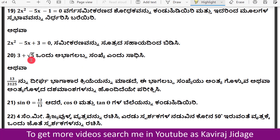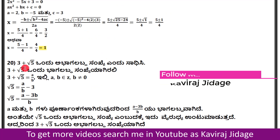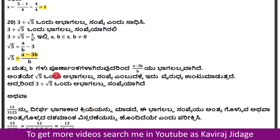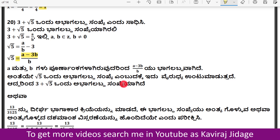Question 20: Prove that 3 + √5 is an irrational number. Assume 3 + √5 = a/b, where a and b are integers. Then √5 = a/b − 3, which gives a − 3b = b√5. Since a and b are integers, a − 3b divided by b should be rational, but √5 is irrational — a contradiction. Therefore 3 + √5 is irrational.